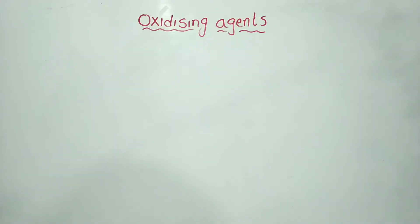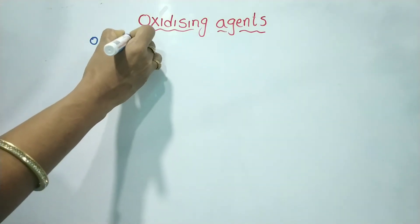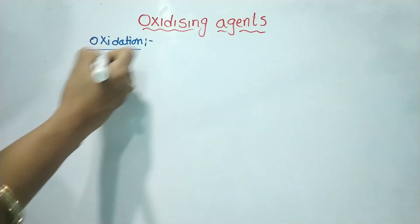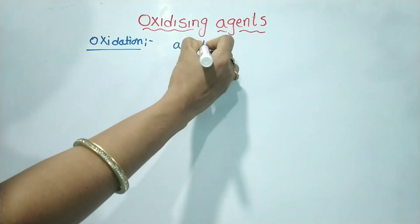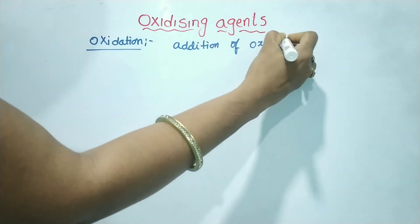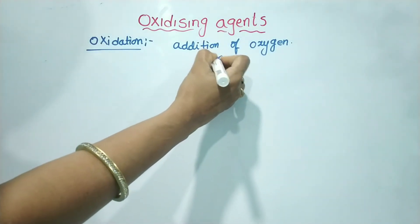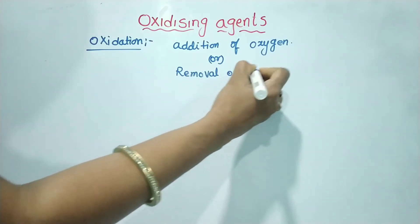Hello everyone, welcome to Chemistry. Today we are going to discuss oxidizing agents in organic compounds. Oxidation is defined as the addition of oxygen or removal of hydrogen.